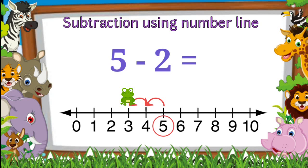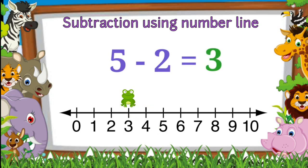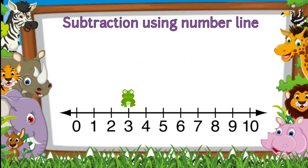The frog lands on three, so five minus two is equal to three. Eight minus four — the frog starts at number eight and then moves four places to the left.